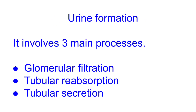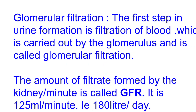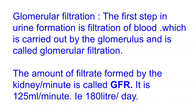Urine formation involves three main processes: glomerular filtration, tubular reabsorption and tubular secretion. Filtration of blood is carried out by the glomerulus at high pressure. The glomerular filtration rate (GFR) is 125 ml per minute, or 180 liters per day. Daily urine formation is only 1 to 1.5 liters, so the remaining filtrate is reabsorbed from the kidney tubules.